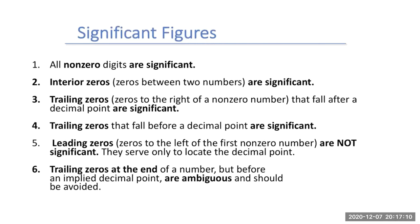When looking at significant numbers, a couple things to remember when figuring out what is significant and what is not. All non-zeros are significant — numbers one through nine are significant. Any internal zero counts as a significant number, so 101 would have three significant figures; that zero still counts. Trailing zeros also count, as long as they fall after a decimal point. So 12.00 would have four significant digits, because we're saying we can measure to that second zero place.